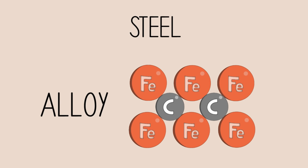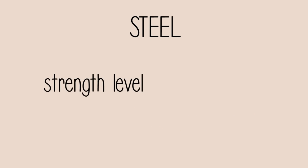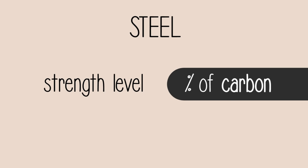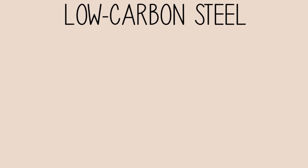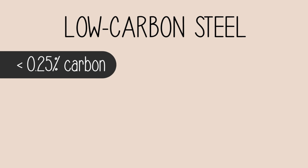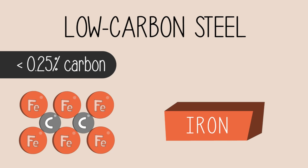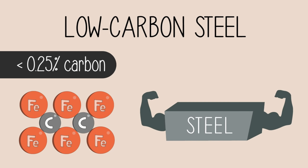Steel is an alloy of iron and carbon. We can get varying strengths of steel, all depending on the percentage of carbon, and therefore many different applications for that type of steel. Low-carbon steel, or mild steel, contains less than 0.25% carbon. The presence of carbon atoms within the metallic structure of iron makes it stronger.